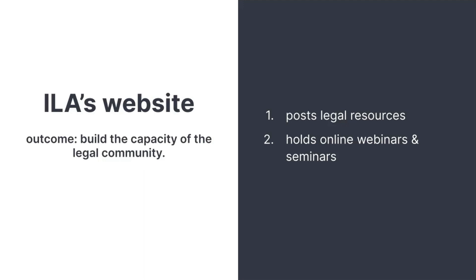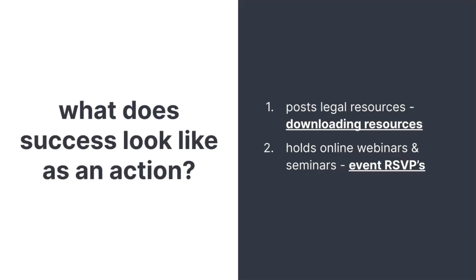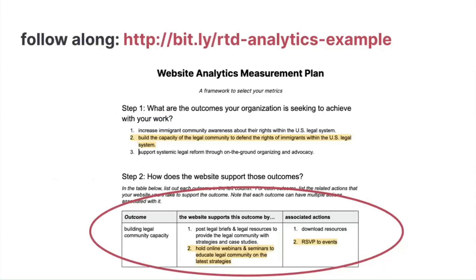What are the actions that take place in these areas of the website to indicate that things are working? For the legal resources area, we want users to come to the website and download resources. On the event side, we want users to come to the website and RSVP to events. Under question number two in the worksheet, we have our outcome outlined, the two areas of the website that support that outcome, and the associated actions that represent success for each area.